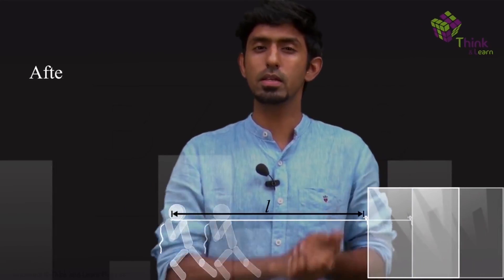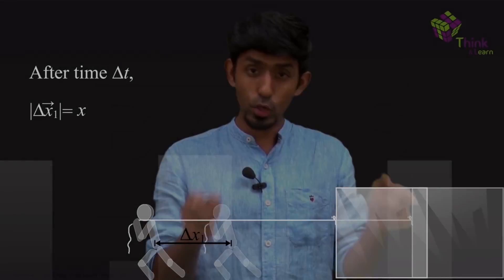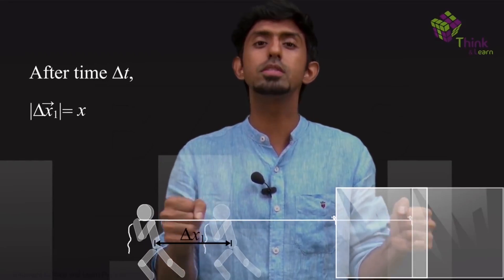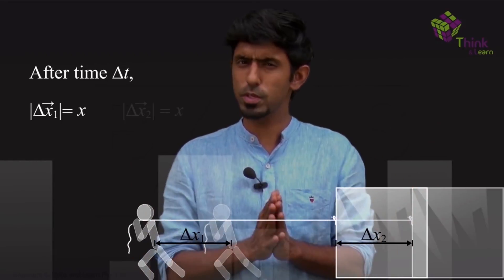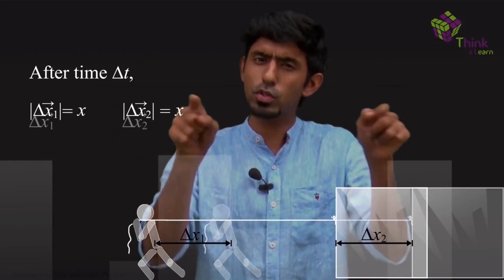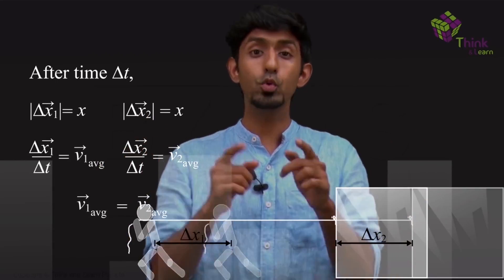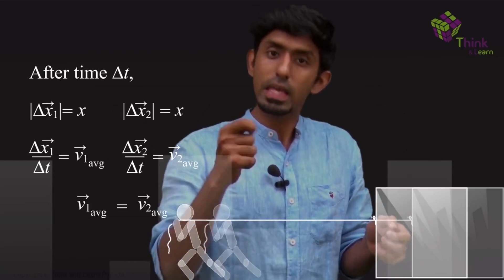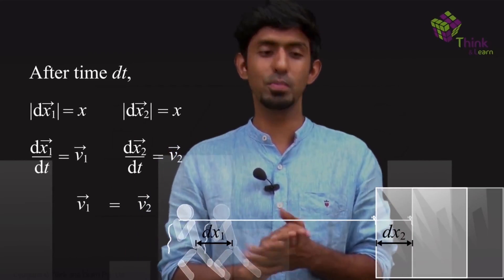If I take this inextensible string and attach one end of it to a block on a horizontal surface and hold the other end and start walking — after some time, let's say delta t, my displacement is x. What will the displacement of the block be? Because the string is taut and doesn't change its length, the displacement of the block must also be x. If both of these took time delta t, then the average velocities must also be the same. And if we make delta t really small, the instantaneous velocity must also be equal for both.